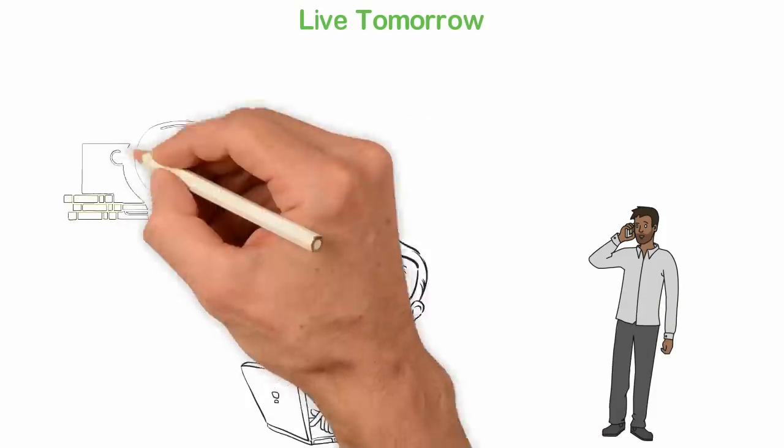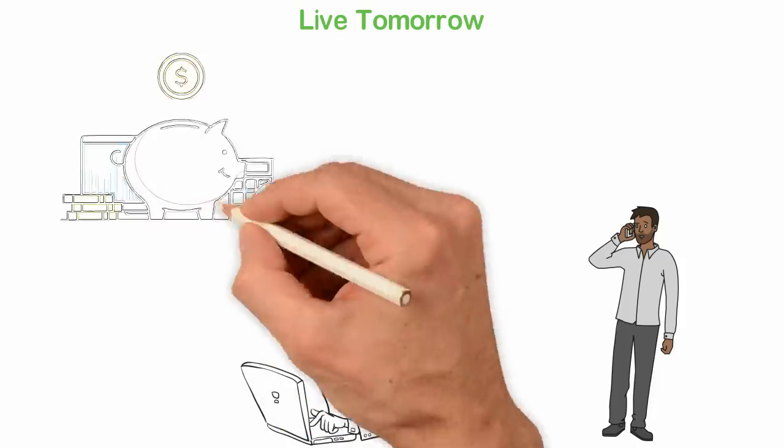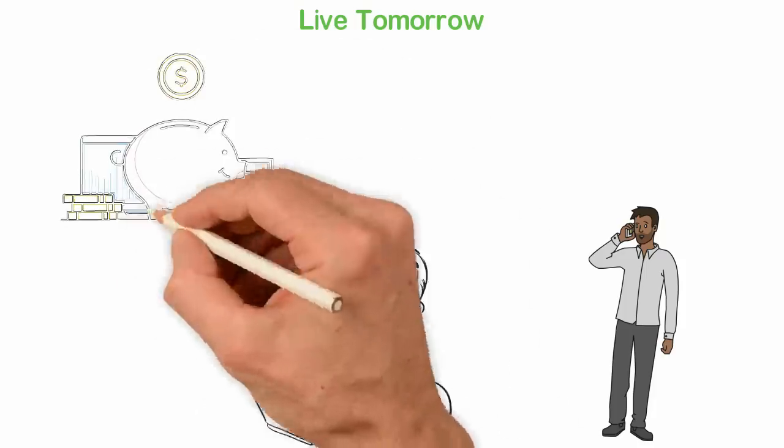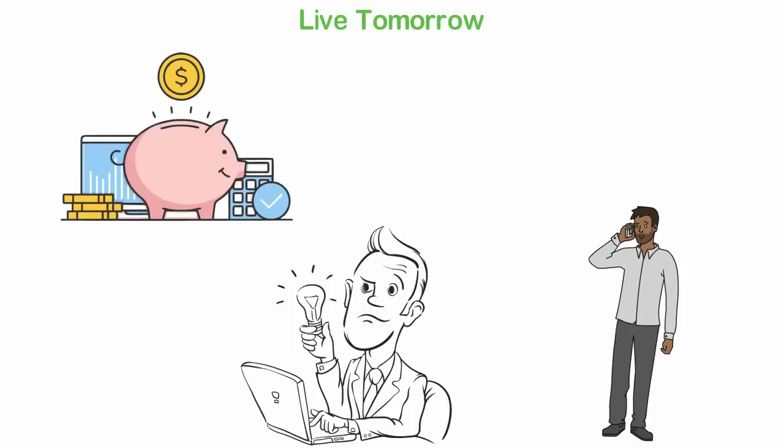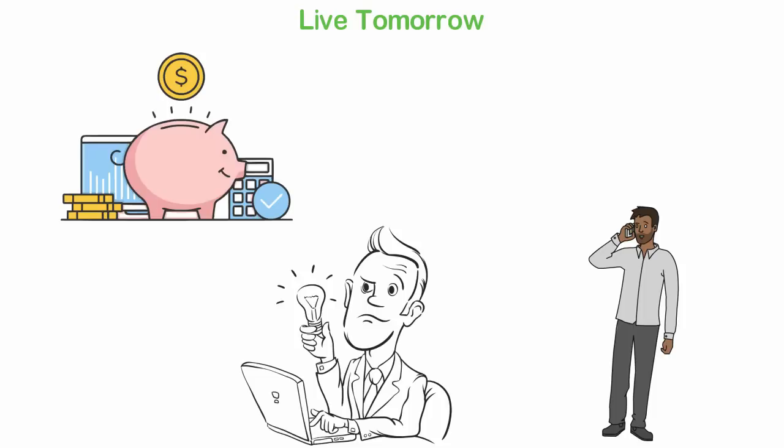Learning how to live in tomorrow means that you think about tomorrow first before you think of today. This means that you're willing to sacrifice today to have a better tomorrow. Again, you can develop it by trying to keep a part of whatever you earn, even if it's 1%.